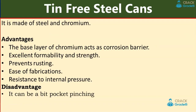Tin-free steel cans are made of steel and chromium. Advantages: the base layer of chromium acts as a corrosion barrier, excellent formability and strength, prevents rusting, ease of fabrication, and resistant to internal pressure. Disadvantage: it can be a bit costly.